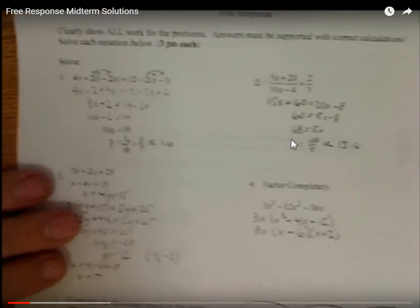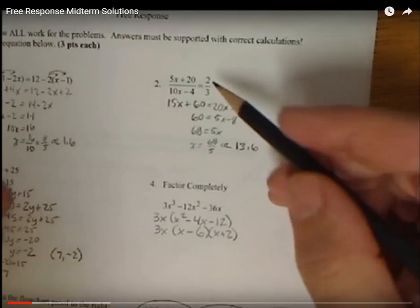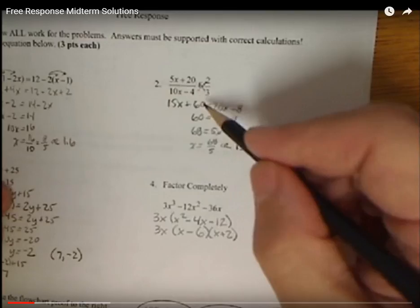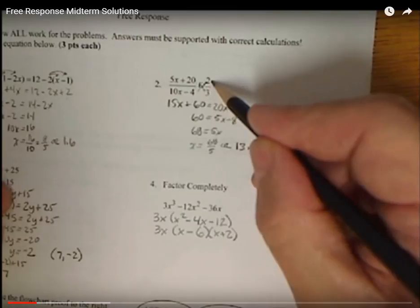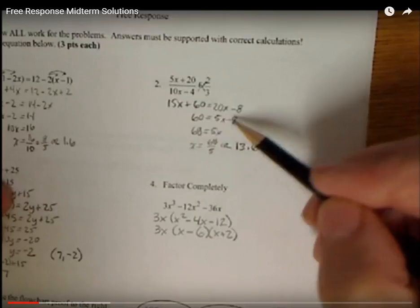For the second type, we need to see about cross multiplying. So if you just cross multiply here, we have 15x plus 60 is equal to 20x minus 8. Now again, we just want to move our x's to one side. So I subtracted 15x from both sides. Added 8. We get 68 equals 5x. Then we divide it by 5. You can leave your answer as 68 over 5 or you can give a decimal answer like 13.6.